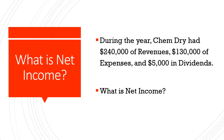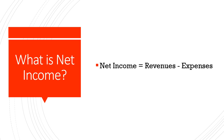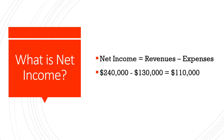With this problem, we're asked to figure out what is net income. We have revenues, we have expenses, and we have dividends. Net income is revenues minus expenses, so dividends are not factored in when figuring out net income. We have revenues of 240,000 minus expenses of 130,000, which gives a net income of 110,000.